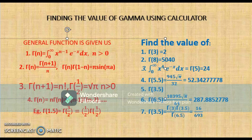The first identity I want to look at is that gamma of n is equal to the integral from 0 to infinity of x to the power n minus 1, multiplied by e to the power negative x, with respect to dx, where n is positive.